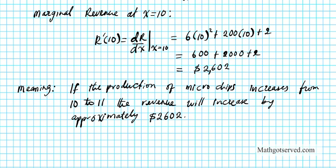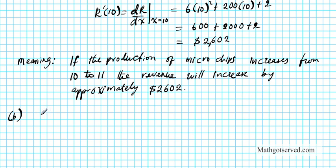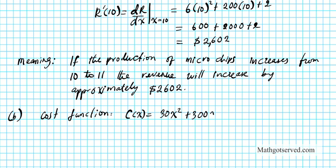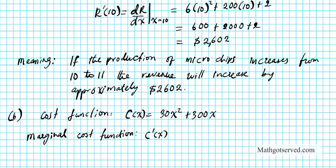Now let's deal with the marginal cost. The cost function is C(x) = 30x² + 300x. The marginal cost function is C'(x), the derivative of C with respect to x. Applying the power rule and term-by-term differentiation to this polynomial, the derivative is C'(x) = 60x + 300.